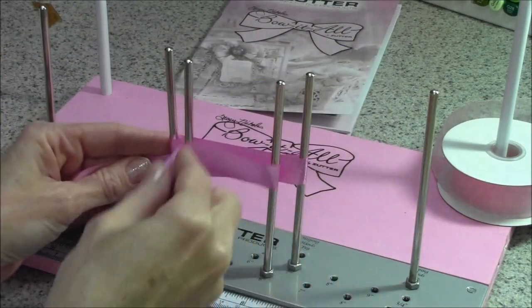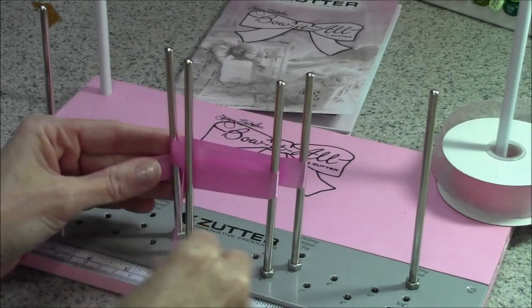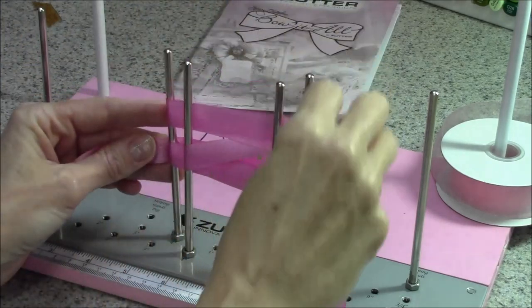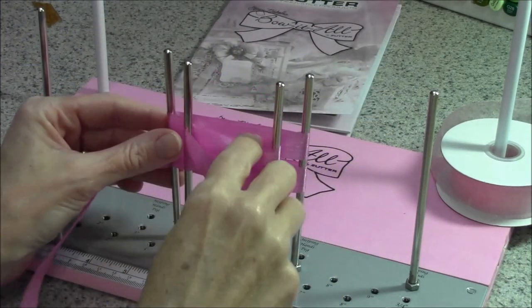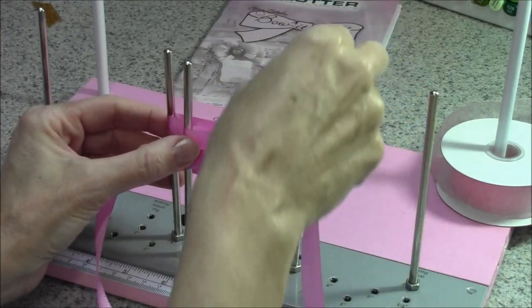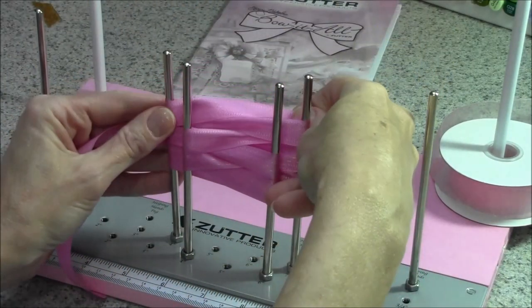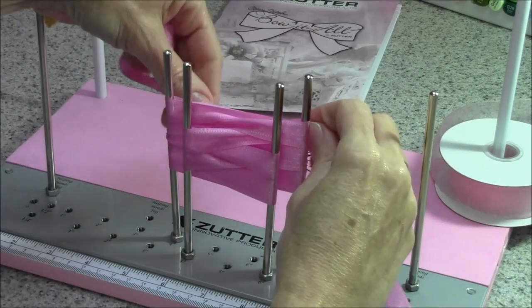I'm going to figure eight around the back pegs. And now we're going to figure eight around the front. Now we're going to go back to the back. And then back to the front. And we'll do one more in the back. So now we're going to have three loops in the back. Two loops in the front.